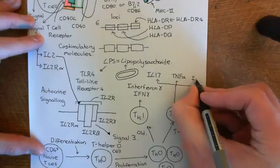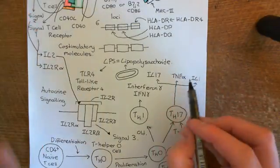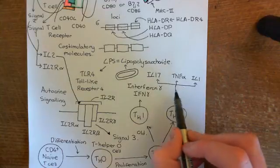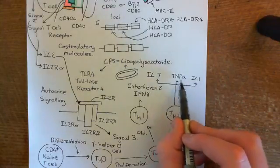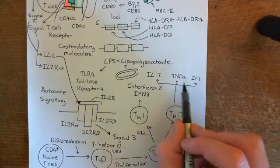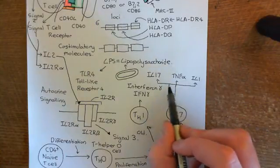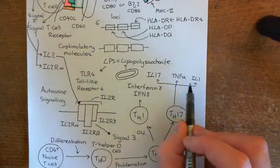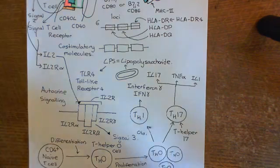They also secrete tumor necrosis factor alpha and interleukin-1. Tumor necrosis factor alpha and interleukin-1 are going to activate endothelial cells, cause type 2 activation, and continue the inflammatory response. However, these three cytokines are also going to be responsible for the degradation of the bone.